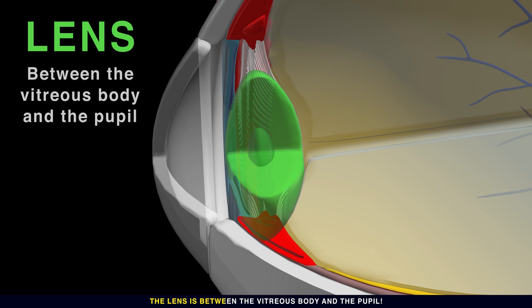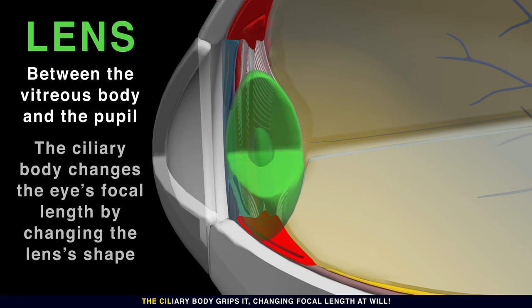The lens is between the vitreous body and the pupil. The ciliary body grips it, changing focal length at will.